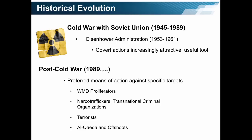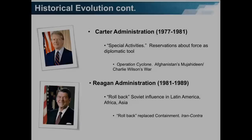We look at the historical evolution of covert action in the U.S., beginning with the Cold War with the Soviet Union, with a special focus on the Eisenhower administration, where covert actions became increasingly attractive and were thought to be and used as a useful tool in international policy. In the post-Cold War period, covert actions became the preferred means of action against specific targets, such as WMD proliferators, narco-traffickers, transnational criminal organizations, terrorists, al-Qaeda, and its affiliates.